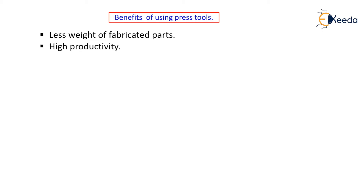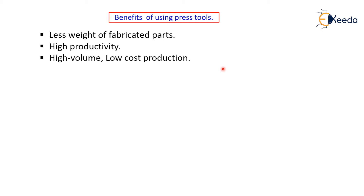The second benefit is high productivity. When a press tool is designed for a typical component, the same tool can be used to produce components in large quantities. You can get high productivity by using these press tools. Related to this is high volume and low cost of production — if the volume is more, the component cost is less, so the production cost is reduced.